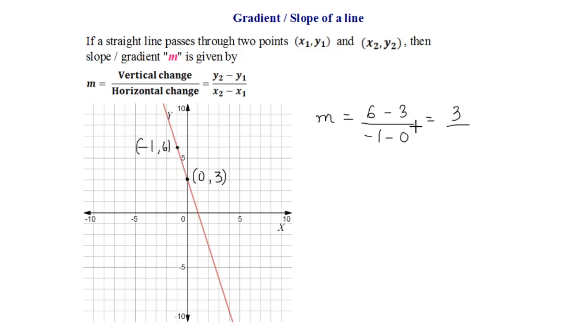And let's find x2-x1 which would be -1-0. So m is equal to (6-3) which is 3, and -1-0 that is -1. Hence I get the value of m as -3. Isn't that simple?